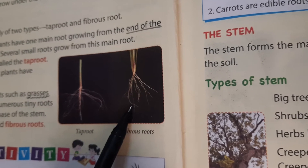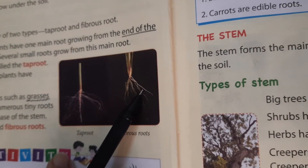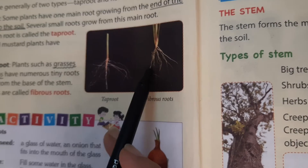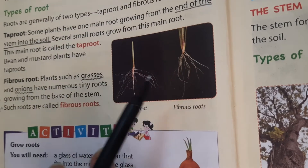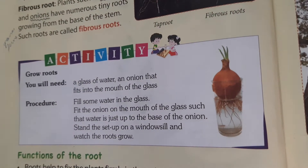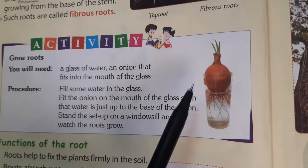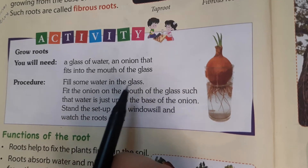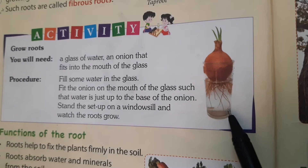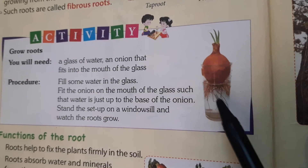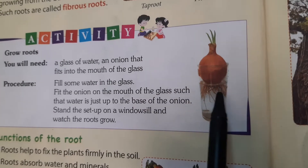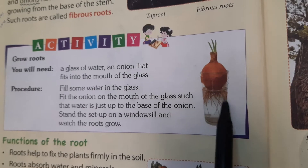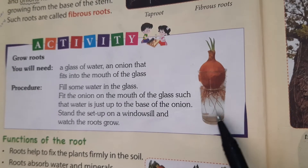Fibrous roots are found in grasses — in your garden or lawns there are such roots. And in onions too — when an onion grows inside the soil, it has the same type of fibrous roots. Here is an activity for you: take a glass, put water in it, and place an onion in the water. Some days later, you will see roots growing from the bottom of the onion that is soaked in the water. This is an activity you can do at home.